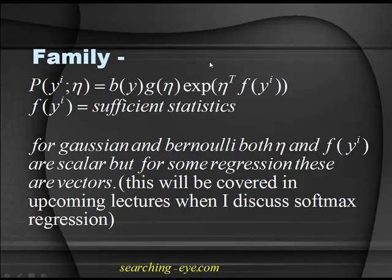This is the case when y_i is scalar. Just as we represented the distribution for least squares in terms of Gaussian and for logistic regression in terms of Bernoulli, likewise for the general case you can represent it using the exponential family distribution.